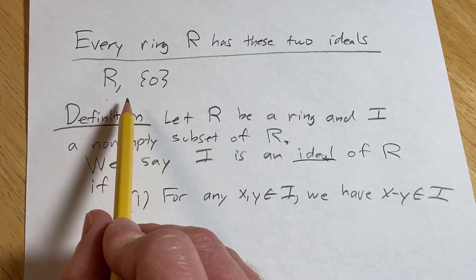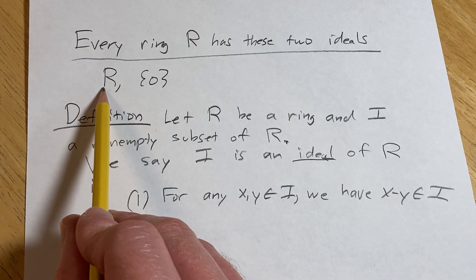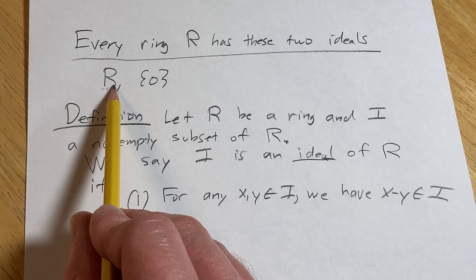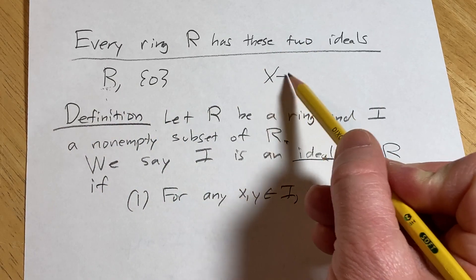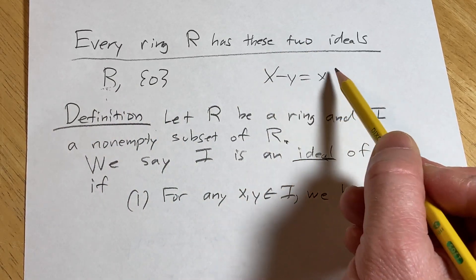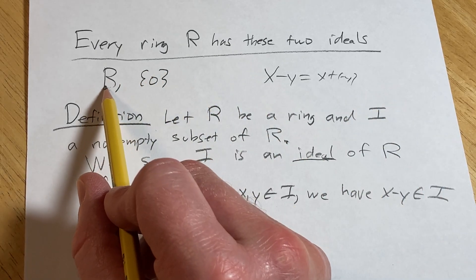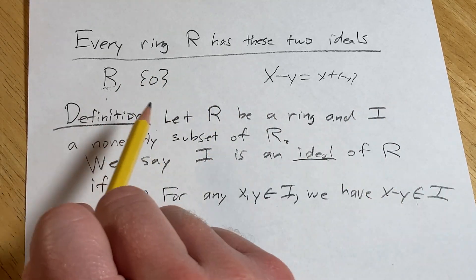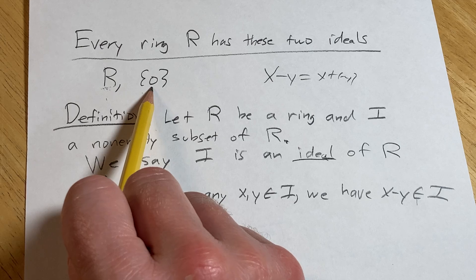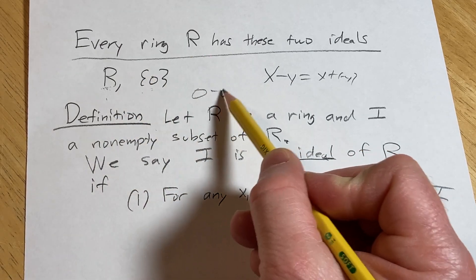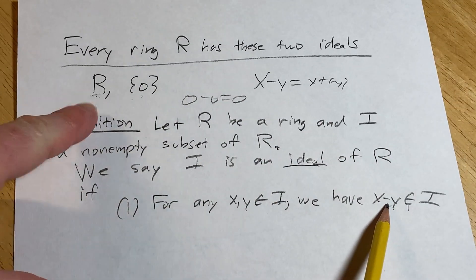So if you think about our examples here, if you take any two elements in the ring and subtract them, is it there? Absolutely, because subtraction is defined, right? It's addition, it's a binary operation on R. Yes, obviously. And here, well, 0 minus 0 is 0. So yeah, that's definitely going to be true for both of these.